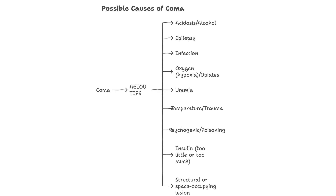AEIOU TIPS stands for Alcohol, Epilepsy, Infection, Overdose, Uremia, Trauma, Insulin, Poisoning, and Stroke. It helps you quickly run through some of the most common and serious causes of coma — like a mental checklist.